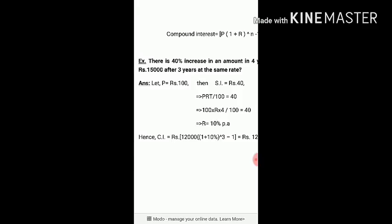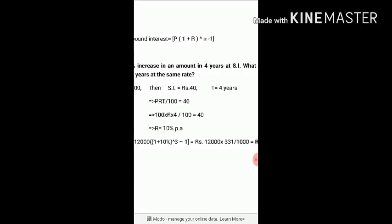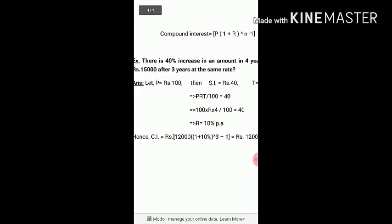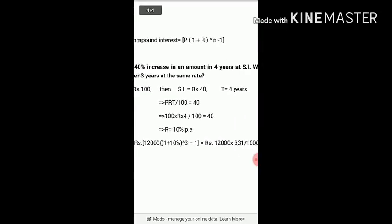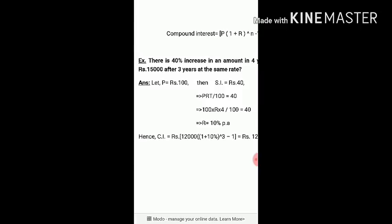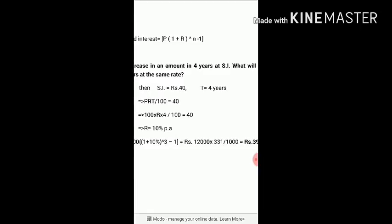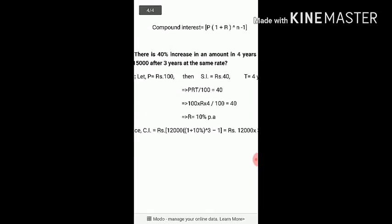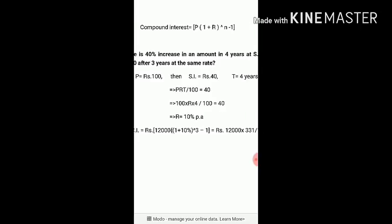Question: there is a 40% increase in an amount in 4 years at simple interest. Suppose the principal P is Rs. 100. The simple interest value is 40, and time T is 4 years. Using the simple interest formula, PRT by 100 equals 40. Substituting P equals 100 and T equals 4: 100 into R into 4 divided by 100 equals 40. Solving, R equals 10% per annum. So the rate of interest is 10% per annum.